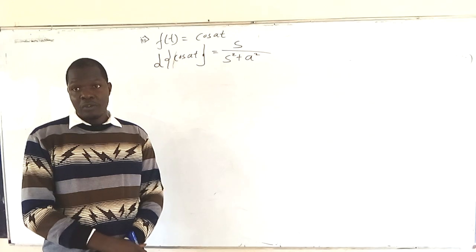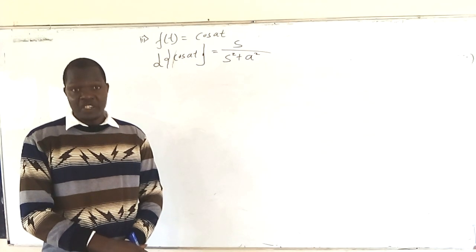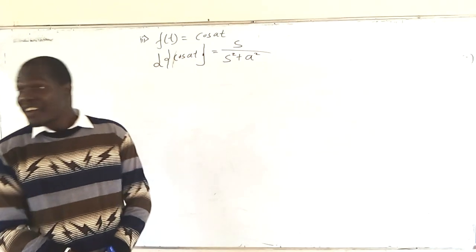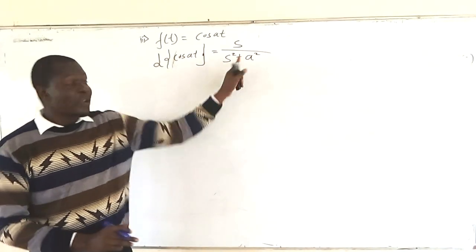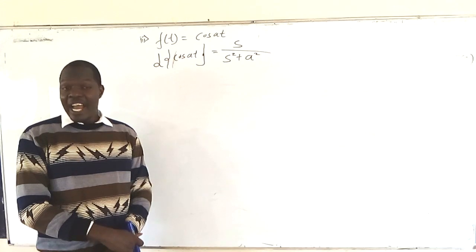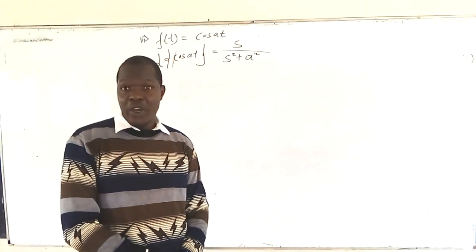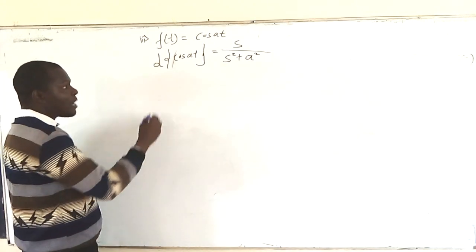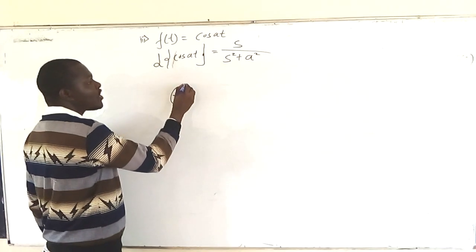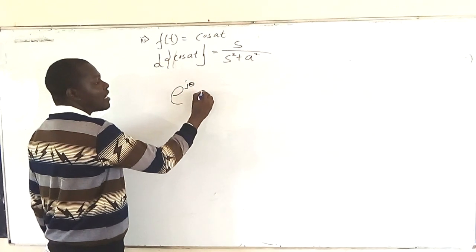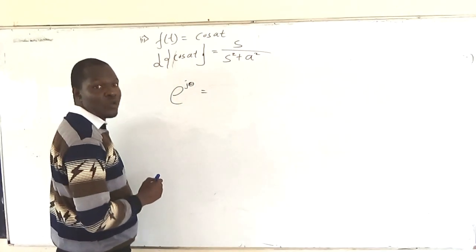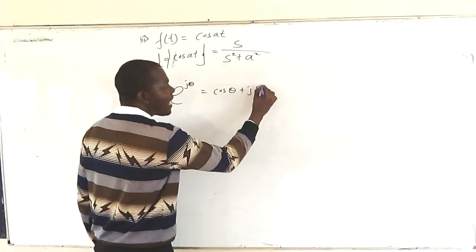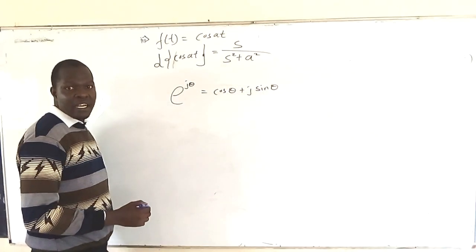We want to see how it is coming about from first principles. This is a predefined formula, but we want to derive it. If you remember Euler's equation in complex numbers: exponential j theta gives you cos theta plus j sin theta. Our variable here is t.